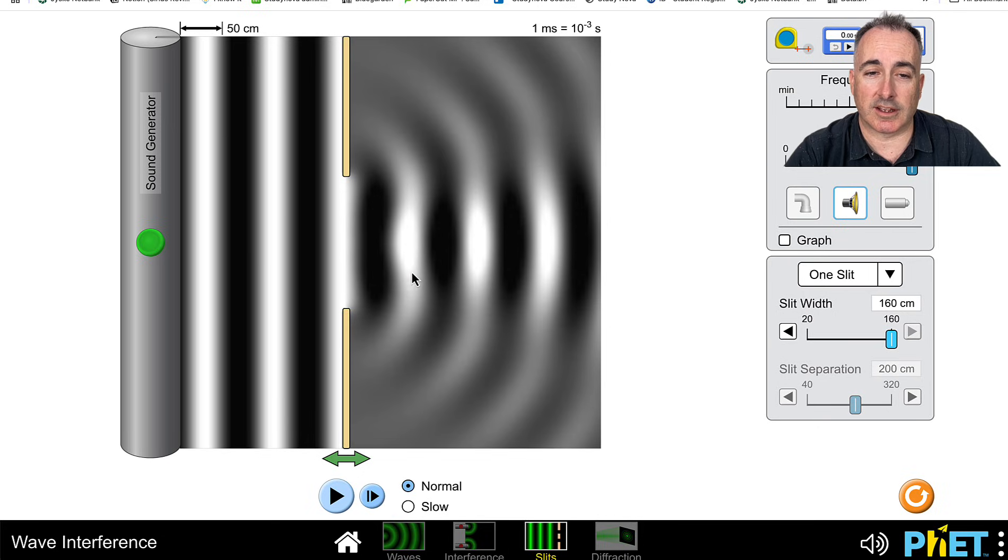And do you notice this opening is bigger than the wavelength? And what happens then is, look at this, on this end here, it's mostly straight up and down, except it does curve a little bit. So there's some diffraction, sure.